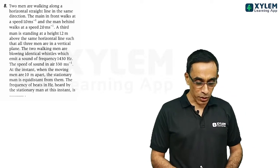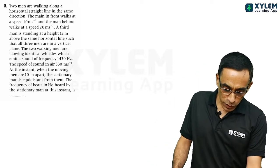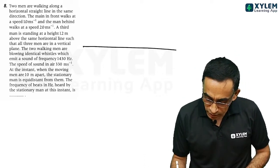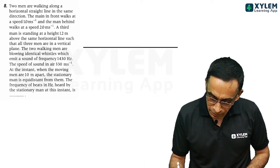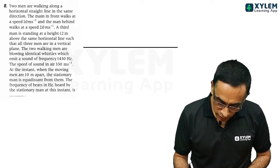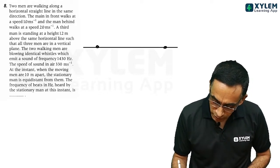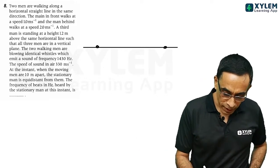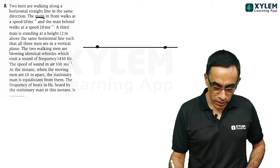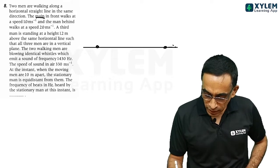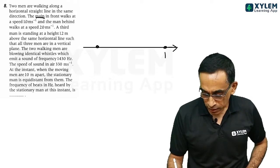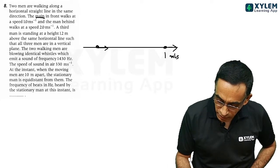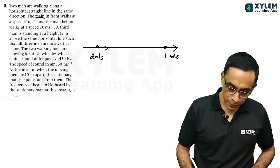You can see that from here. Two men are walking along horizontal straight line in the same direction. Let us consider one straight line here. There are two men walking. That is one source here, another source here, they are walking in the same direction. The man in the front walks at 1 meter per second. Assume that man at the front speed 1 meter per second. Other man has got the speed in the same direction, that is 2 meter per second.